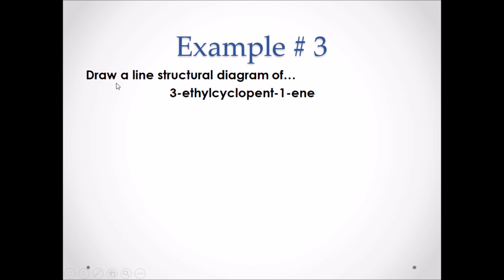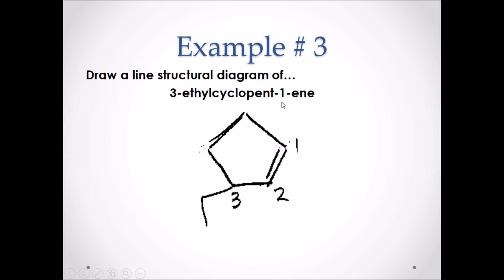Example number three. Draw the line structural diagram of 3-ethyl cyclopent-1-ene. Pause the video and attempt this example. Remember when drawing, start with the back of the name — pent-1-ene — that means we have a five-carbon ring: one, two, three, four, five, with one double bond. The double bond takes priority, so it will always be given the first carbon. Therefore, this will be our second carbon and this will be our third. And we have an ethyl branch coming off the third carbon. The ethyl has one, two carbons.